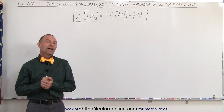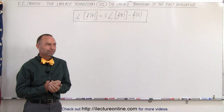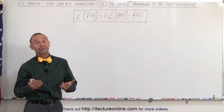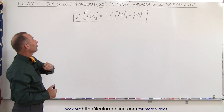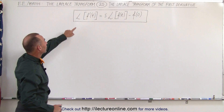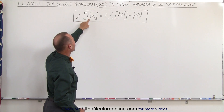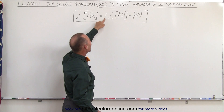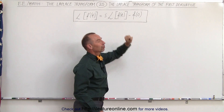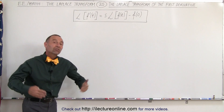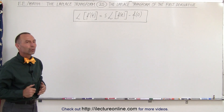Welcome to Electronline. Now let's take the Laplace transform of derivatives. Let's start with the first derivative, because that's the easiest one. The Laplace transform of the first derivative of a function is equal to s times the Laplace transform of the function, minus the function evaluated at zero. That's the equation — you can simply plug it in and use it.